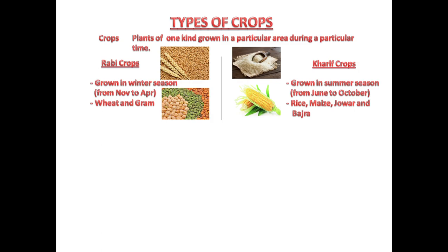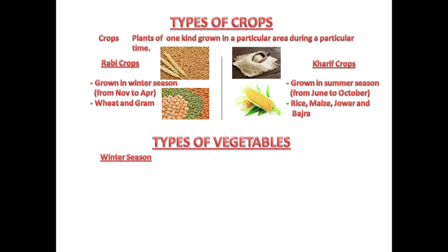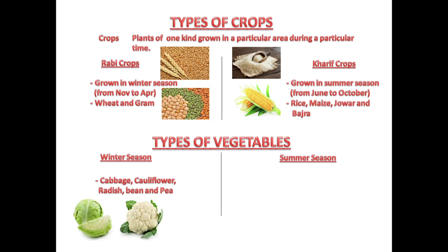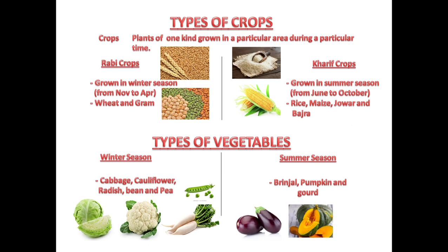Now let us learn about types of vegetables. Some vegetables grow in winter and some in summer. Winter vegetables include cabbage, cauliflower, radish, bean, and pea. Summer vegetables include brinjal, pumpkin, and gourd. Pictures of each are shown.